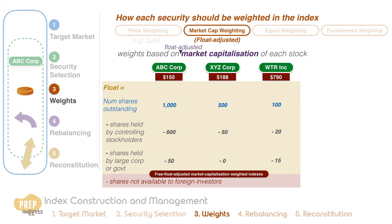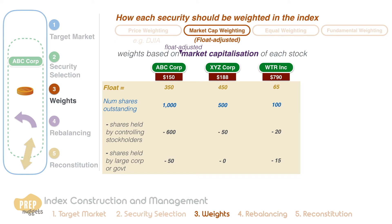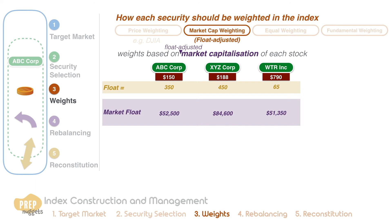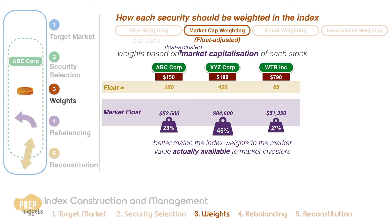Let's make some calculations for a simple float-adjusted market cap index. If we multiply the number of floating shares by the market price, we get the market float for each stock. We can observe that the weight distribution has shifted after adjusting for market float. XYZ Corp has the highest weight in this index. The reason for float adjustment is to better match the index weights to the market value actually available to market investors. The S&P 500 index is an example of a float-adjusted market cap weighted index.